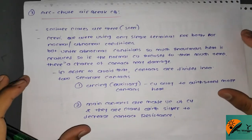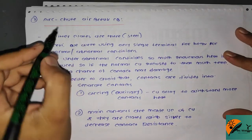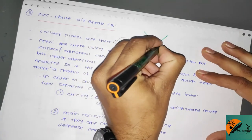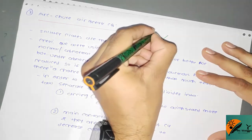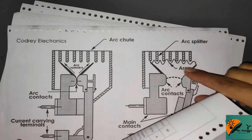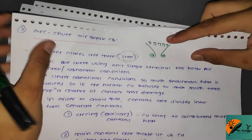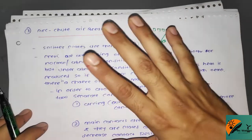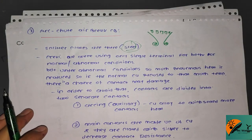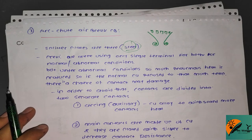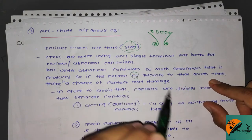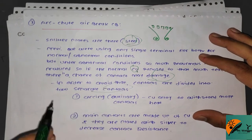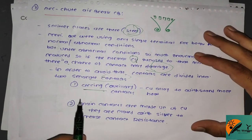Another one is the arc chute circuit breaker. In this type, splitter plates made of steel are present. When the contacts separate, the steel plates act on the arc. Previously, a single terminal was used for both normal and abnormal conditions, but under abnormal conditions an enormous amount of heat is produced. If normal copper contacts are exposed to that temperature, there is a chance the contacts may be damaged.